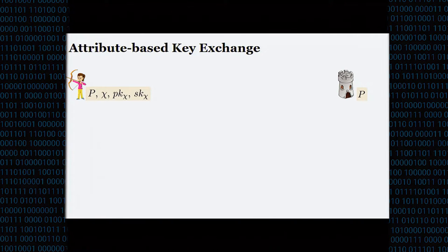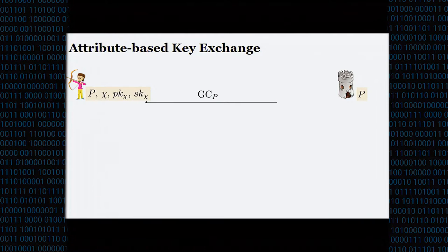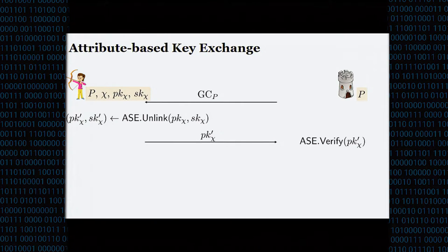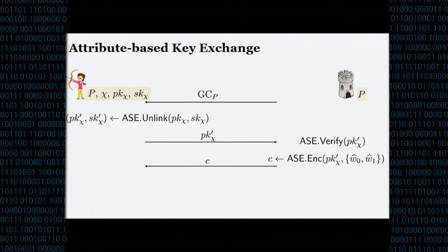In our protocol, besides the attribute vector, the client will also have the corresponding public key and secret key produced by the CA. The server sends a garbling of the policy. The client runs the Unlink algorithm to produce a randomized version of its public key and secret key tied to the same attribute vector. It sends this randomized public key to the server, which verifies it's a valid public key. The server then encrypts the input wire labels to the garbled circuit using this public key and sends the ciphertext to the client, who decrypts and gets the input wire labels associated with its attribute vector.